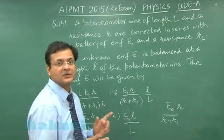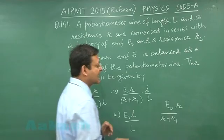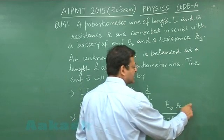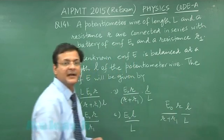This is the total potential drop across that entire length and the entire length is L. But the EMF has been balanced only against a small length, so you will be multiplying it by small l.